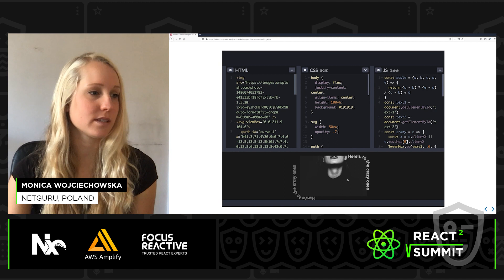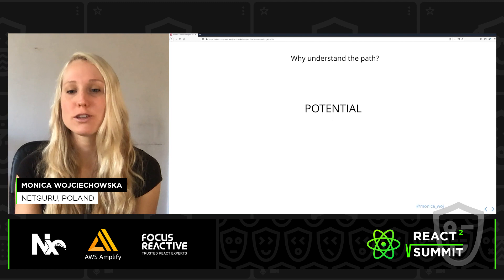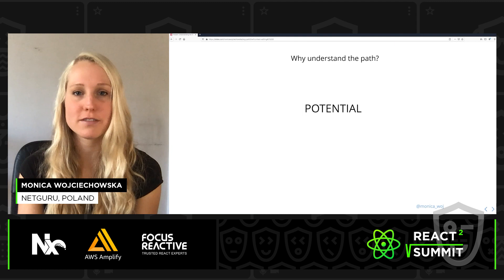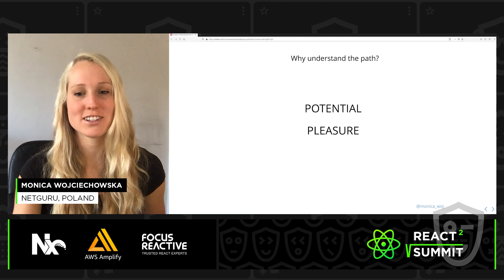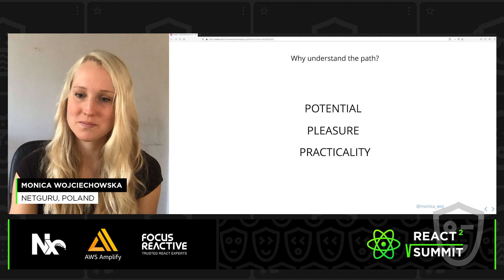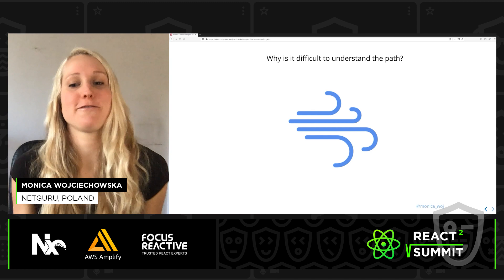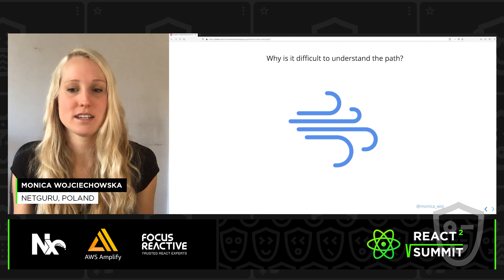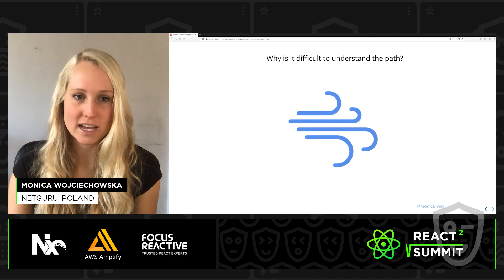So before we dig deeper — why understand the path? Well, huge potential. A path isn't just a visible line, but it's a set of instructions that can be used in a variety of different ways: for pleasure, because we often enjoy things more as our understanding grows, and for practical purposes such as introducing modifications or animations. For example, if a designer gives you custom icons and you want to introduce one small edit — what looks simple looks more like a super long string of numbers, letters, and punctuation behind the scenes.